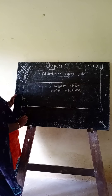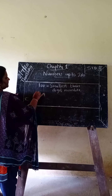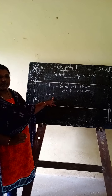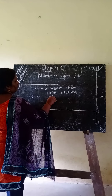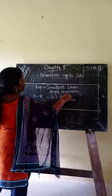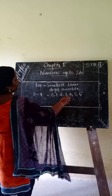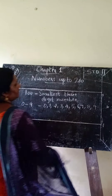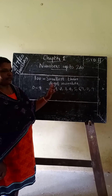What are digits? 0 to 9 are 1-digit numbers. 0 to 9 are called digits. 0, 1, 2, 3, 4, 5, 6, 7, 8, 9 are called digits.